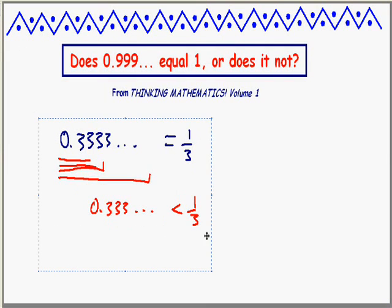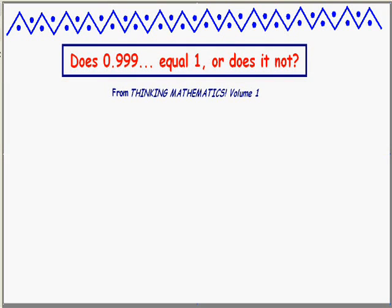Well, it's curious. Folks, for some reason, do not object to saying 0.333... is a third, but they will object to saying 0.999... is one.